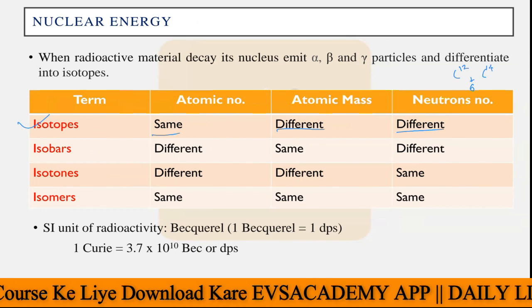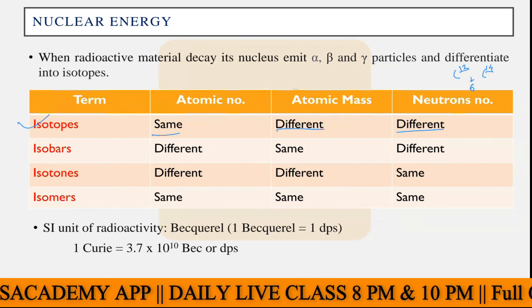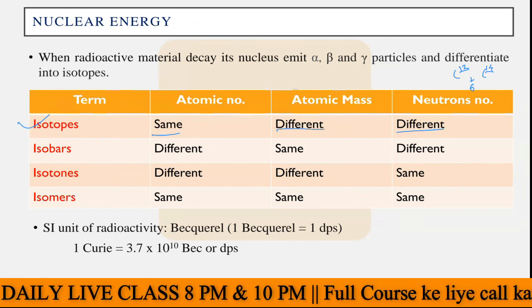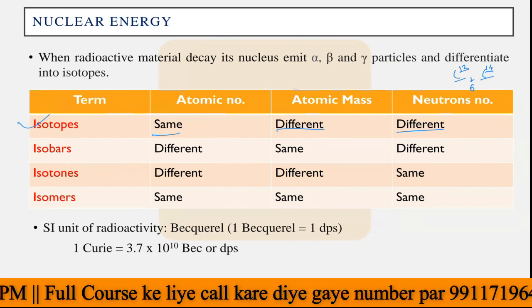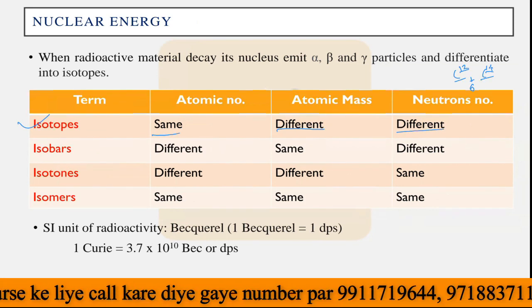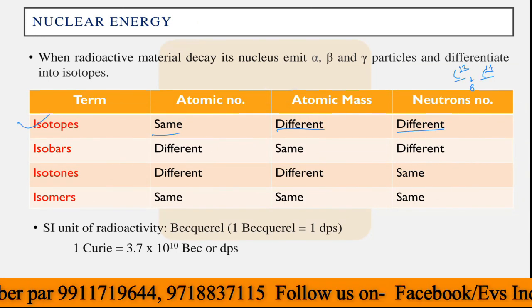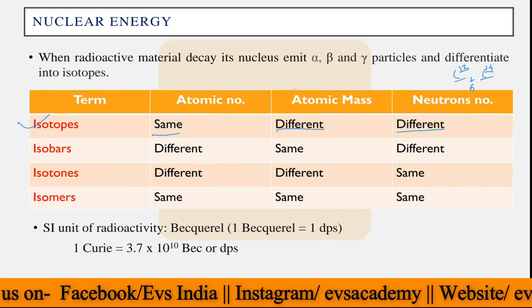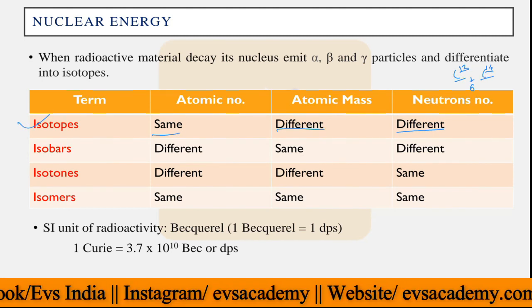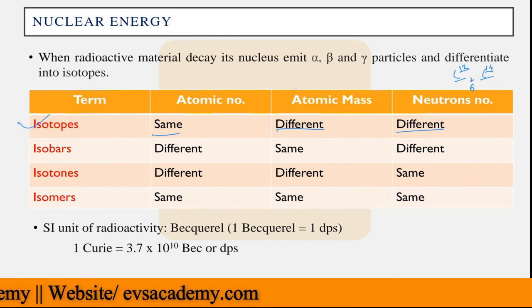Carbon-12 and carbon-14 both share the same atomic number, which is 6. But their atomic masses are different — one is 12 and the other is 14. The neutron numbers differ: carbon-12 has 6 neutrons and 6 protons, while carbon-14 has 6 protons and 8 neutrons, because atomic mass equals protons plus neutrons. Carbon-14 is a radioactive material. That is what isotopes are.